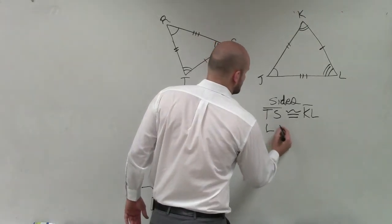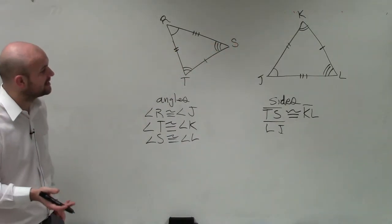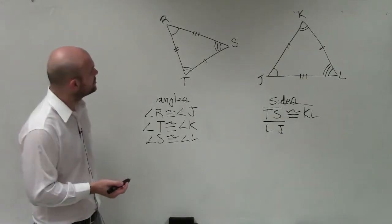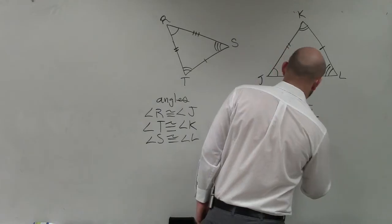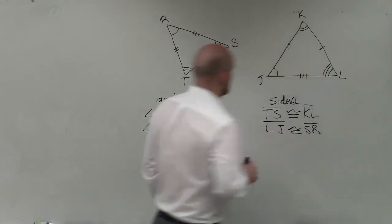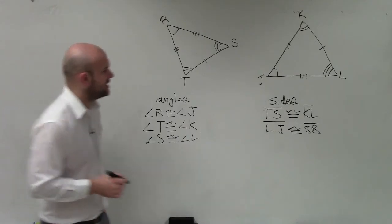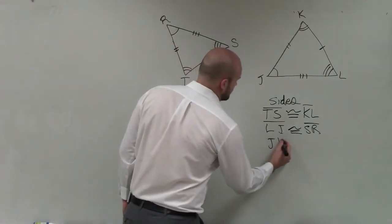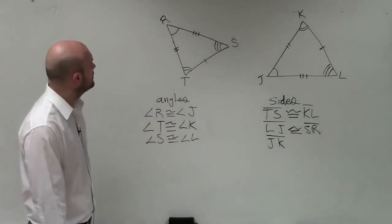So we'll have LJ, which a lot of you forgot to write the lines up top because now we're talking about the lines, so we definitely need to go into this. So LJ is congruent to SR. And then finally, we can do JK. JK is congruent to RT.